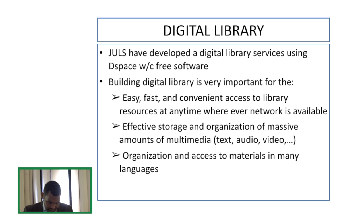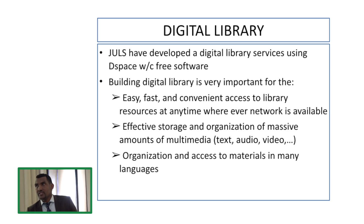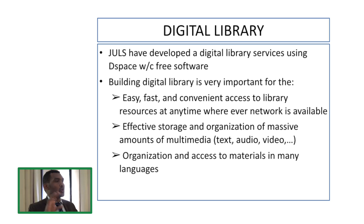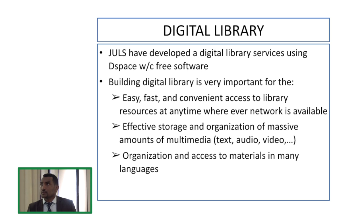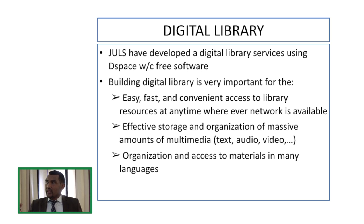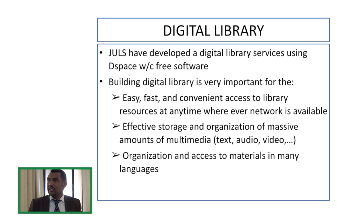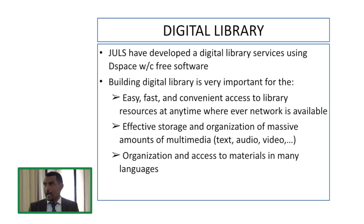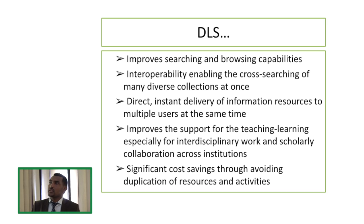We have also implemented a digital library. While automation deals only with bibliographic information, the digital library allows users to get books in digital form rather than coming to collect a physical book. Building a digital library is very important for easy, fast, and convenient access to library resources at any time, wherever the network is available. It enables effective storage and digital organization of massive amounts of multimedia — text, audio, and video — and organization and access to materials in many languages, improving searching and browsing capabilities.